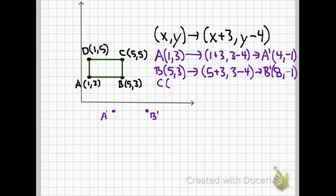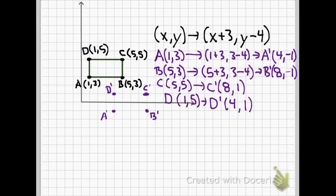For c, which was originally five, five, we add three, and we get that c prime is going to be eight and positive one. So there's c prime. And d prime, our last point, was one, five. d prime is going to be four, one. Let's graph that one out. Four, one goes right there. There's our image.